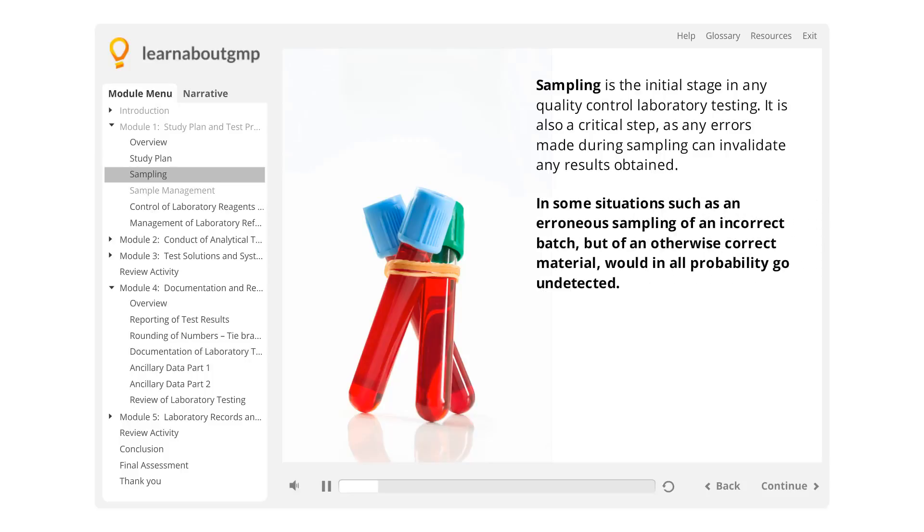In some situations, such as erroneous sampling of an incorrect batch but of an otherwise correct material, would in all probability go undetected. In light of this, the instructor advocates measures to verify correct sampling at the point of source.